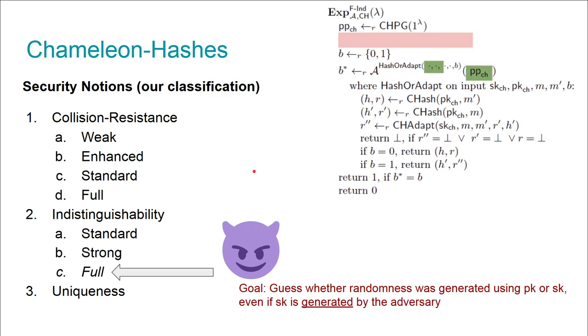Finally, we have full indistinguishability, and here the adversary is actually allowed to generate the secret key and public key, but the left-or-right oracle still remains the same.